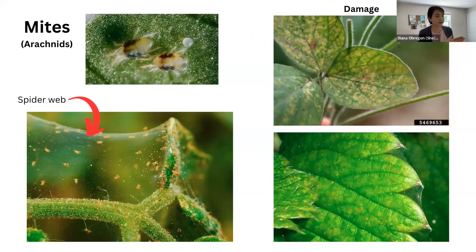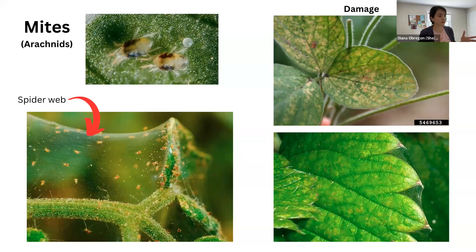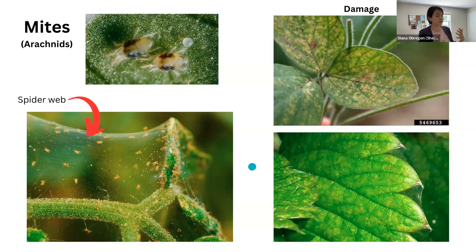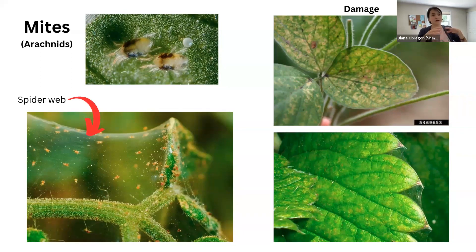I'm including mites here even though they're not insects — they're actually more related to spiders and have eight legs with a single segmented body. I wanted to include them because the leaf damage they cause looks similar to that of whiteflies and aphids, and they're also very tiny. One good sign to detect them is spider webbing. If you see some spider web on your plant, look for mites. The damage they produce can look like a disease — leaves tend to be brownish and yellow, and there may be spider webbing.